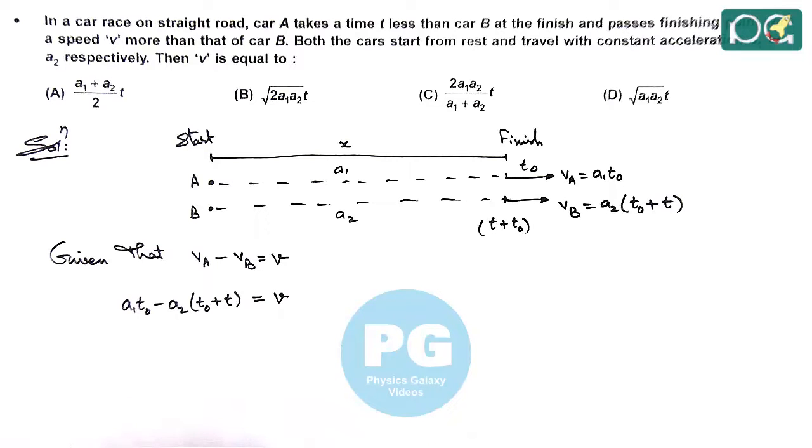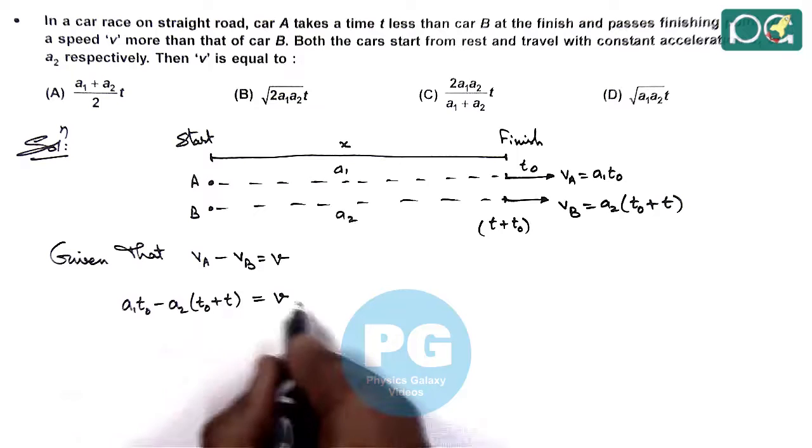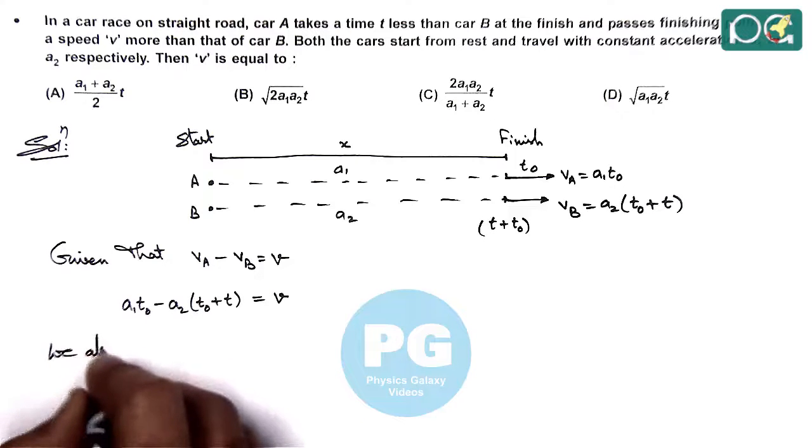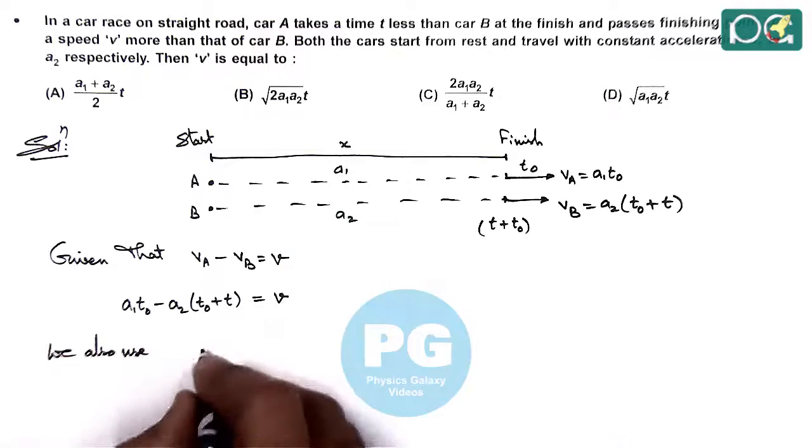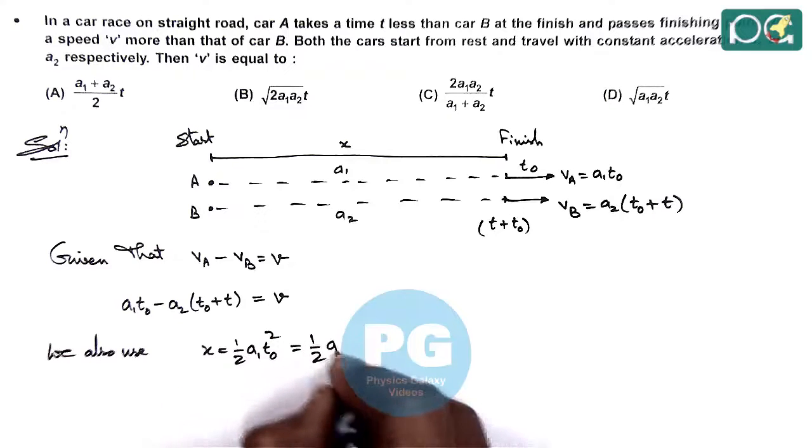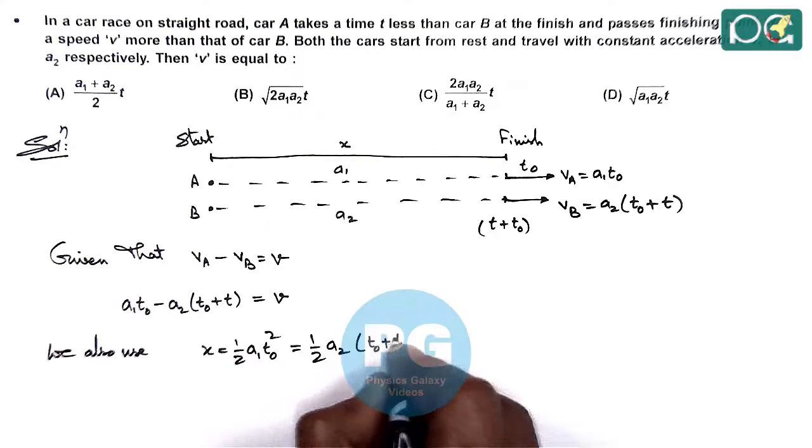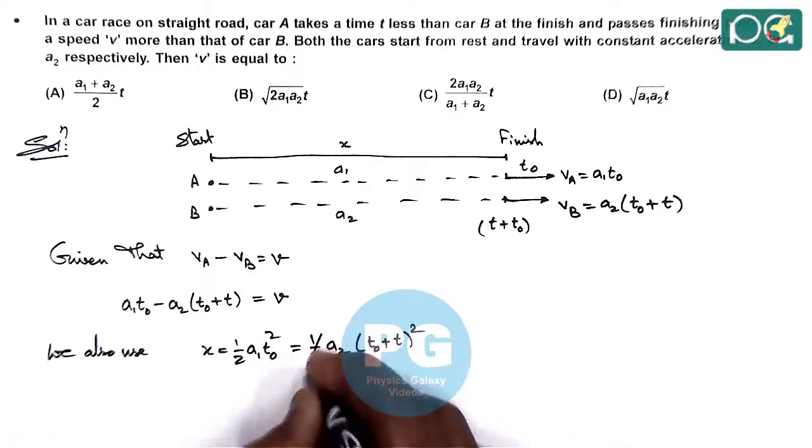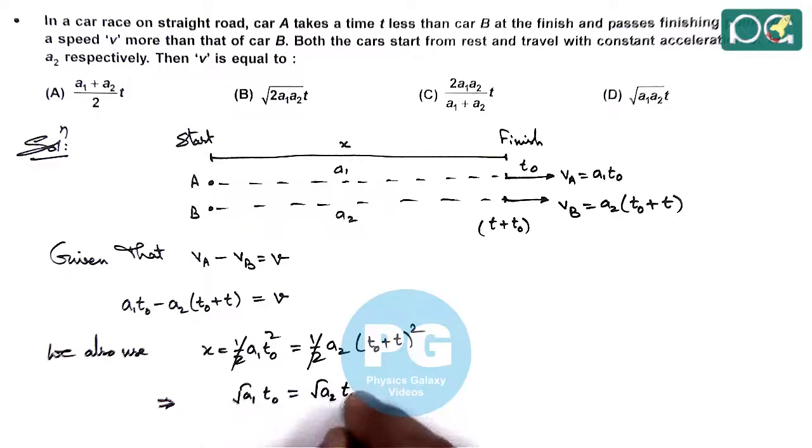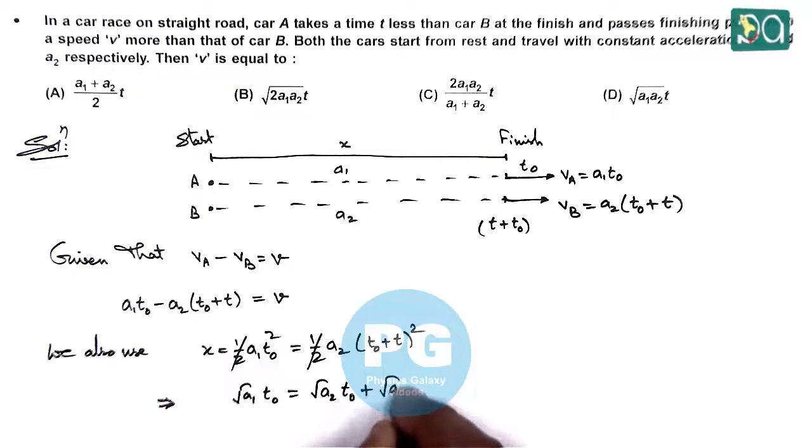So this is what we are getting as a relation from where we can calculate the value of V, but here t naught has to be eliminated. So we can also use the distance x is equal to half a1 t naught squared, which is equal to half a2 times t naught plus T whole squared. Here half gets cancelled out, and if we take this square root, a1 t naught is equal to root a2 times t naught plus root a2 times T.